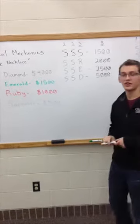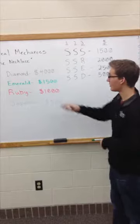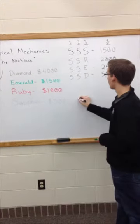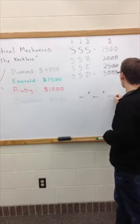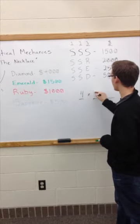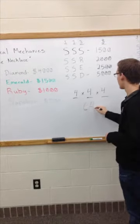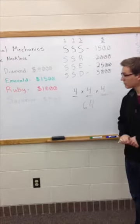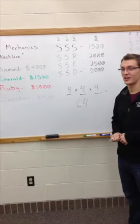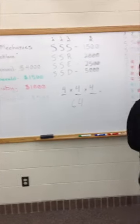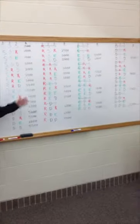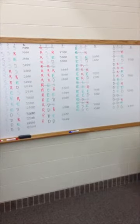We can get our total number of combinations: we have three gem slots and four choices that can fit in each one, giving us a total of 64 combinations. To save the time of writing them all out, I've already done that and have them all listed in the corner. There's a nice pattern — you just rifle them all down the line.